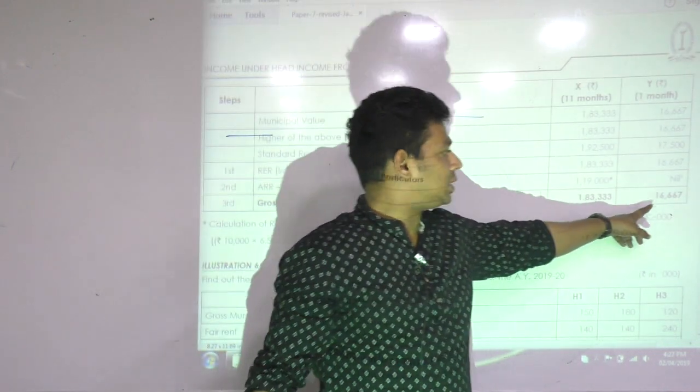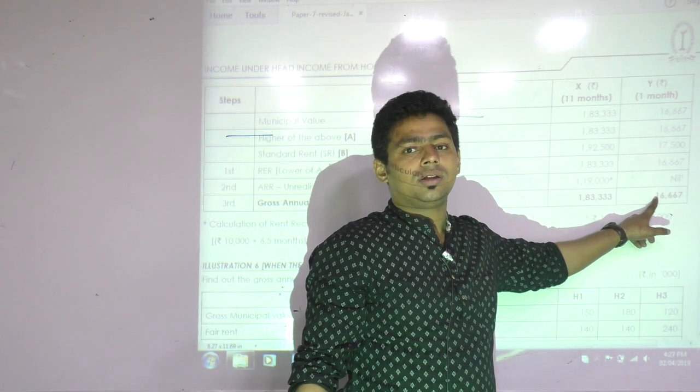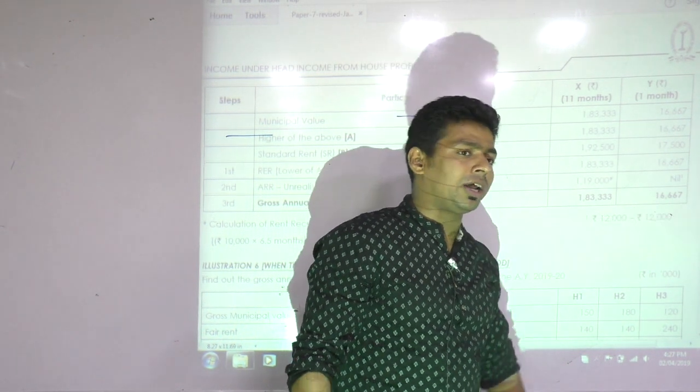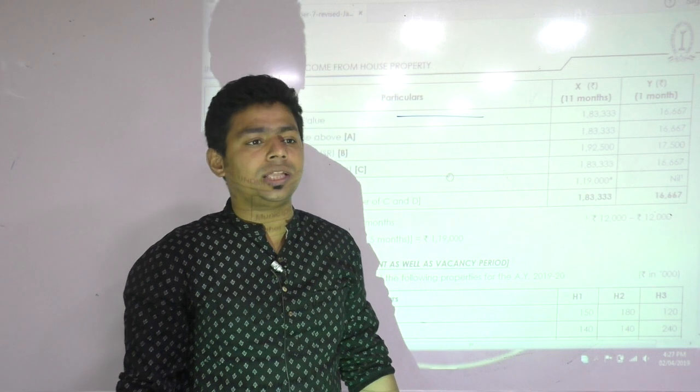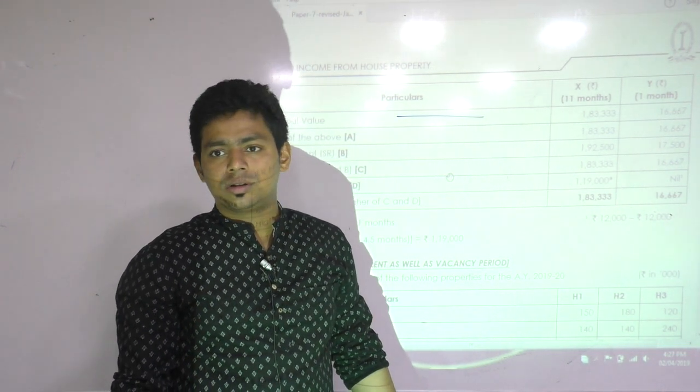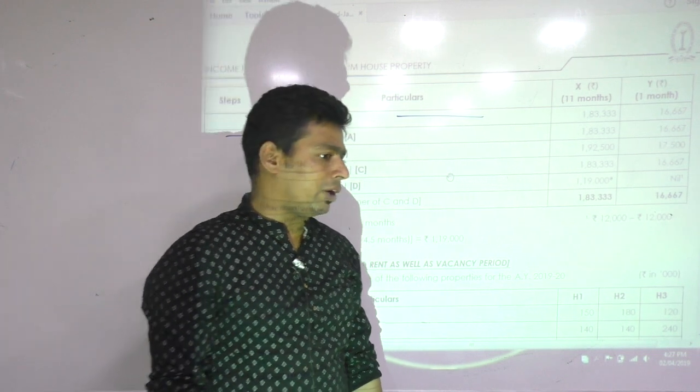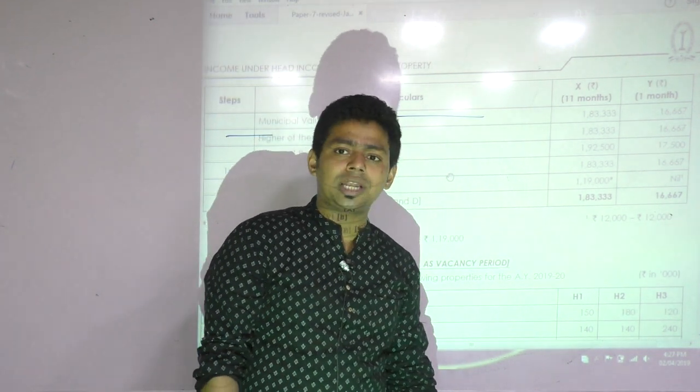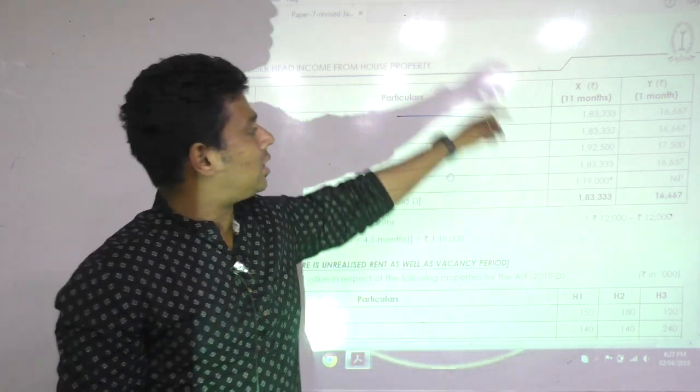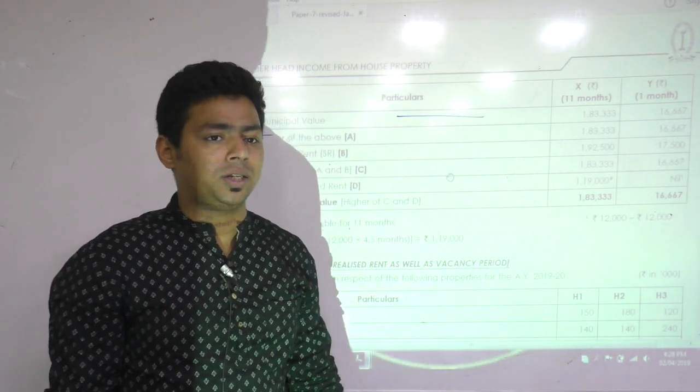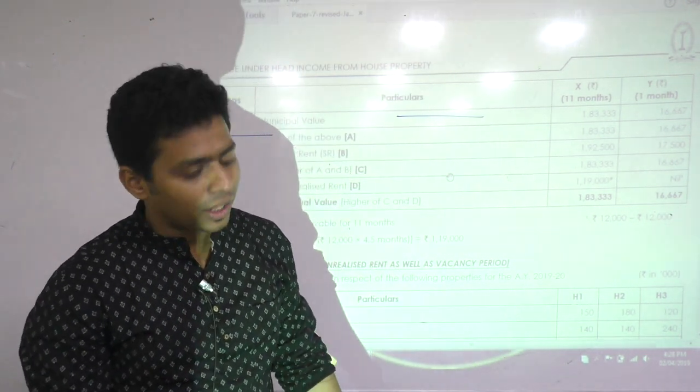But still Mr. Y will pay tax on what? Expected rent. Why? Because expected rent or actual rent whichever is higher is the GAV. So what will be the GAV of Mr. Y? Then Mr. Y will come to you and argue: I did not earn anything, still you are taxing this property. Why? Because in this chapter we don't tax actual rent, we tax rent earning capacity. And this is the method of computing rent earning capacity.